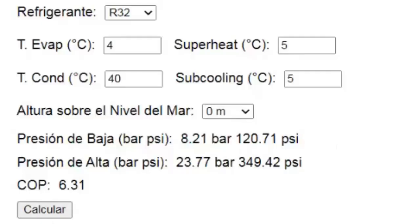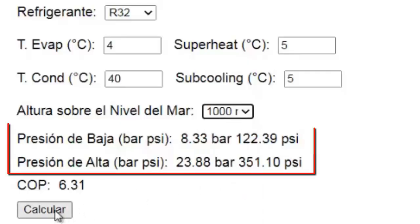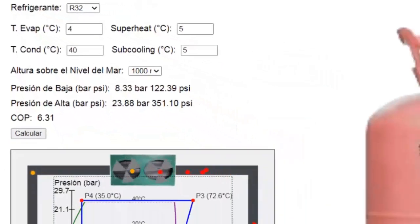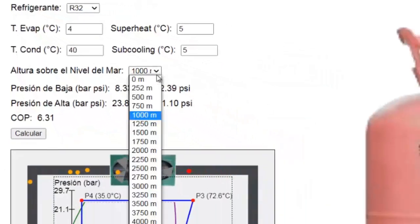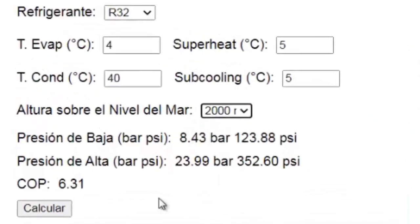In this way, the pressure shown on the gauge will vary from one location to another. For example, at 1,000 meters of altitude, the low and high pressures adjust to the values shown on screen. At 2,000 meters of altitude, the low and high pressures change according to what is shown in the figure.